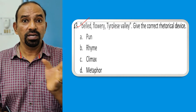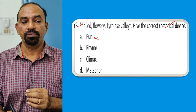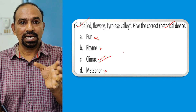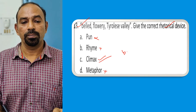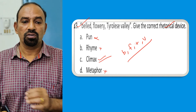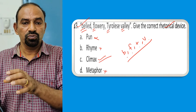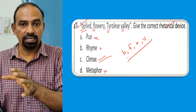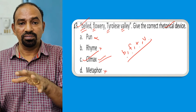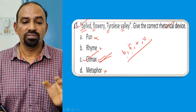Question eighteen: 'Belled, flowery, Tyrolese, valley' — give the correct rhetorical device. The answer is climax. Climax in poetry means using words in ascending alphabetical order. Here the initial letters are B, F, T, V — ascending alphabetical order. When words are arranged in ascending alphabetical order, it is called climax. In drama and film, climax has a different meaning, but in poetry it refers to this ascending arrangement.